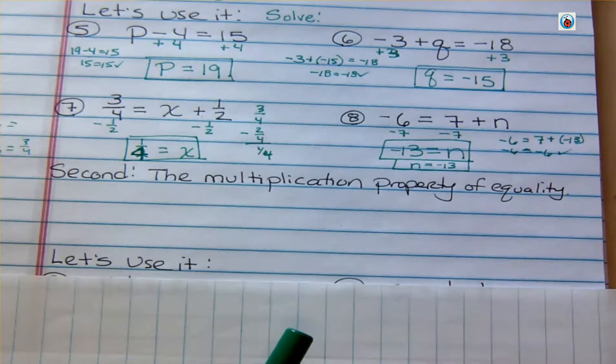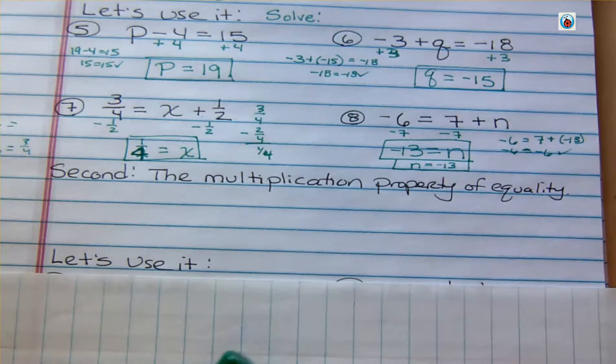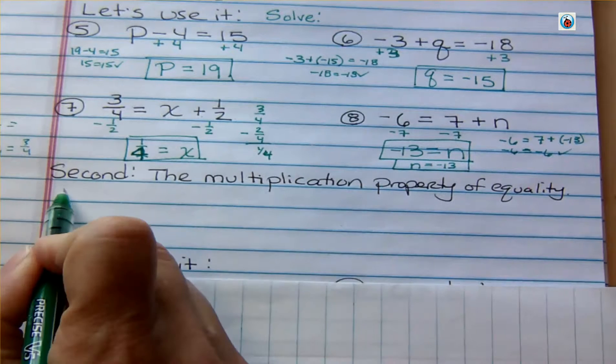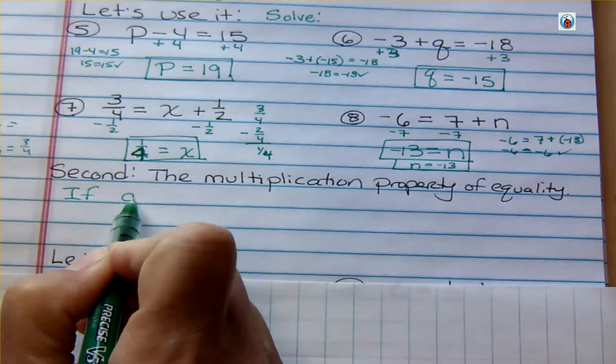And we're going to use it, but first we want to know what it is. So the multiplication property of equality says if A equals B, then AC equals BC.